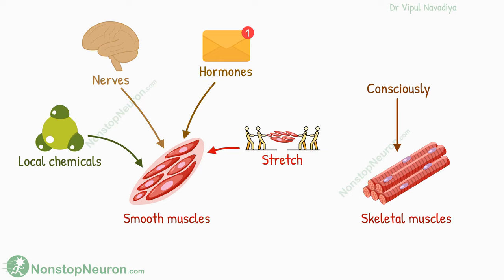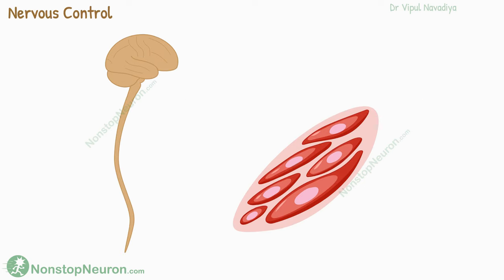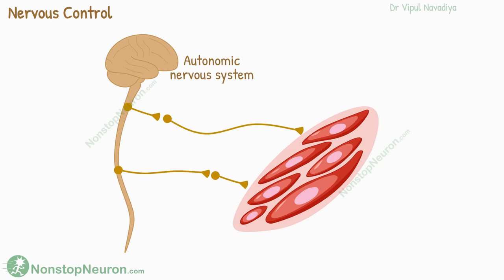Now let's talk about each factor one by one. First, nervous control. The nerves that regulate smooth muscles are part of the autonomic nervous system, which operates unconsciously. There are two types of autonomic nerves involved: parasympathetic and sympathetic.